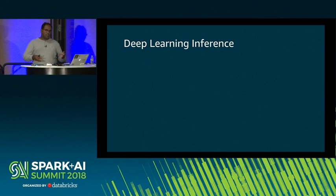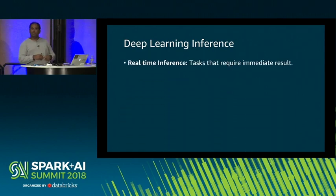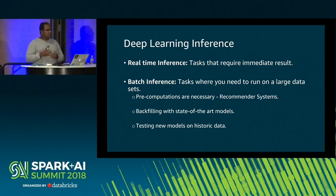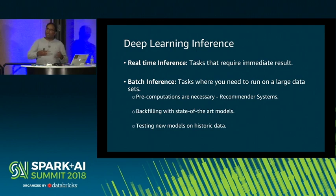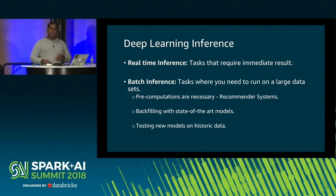The next phase is putting the model into production — inference — where you take the pre-trained model, apply new data, and get predictions. This can be done in two modes: real-time for tasks that need immediate feedback, and batch mode where you have lots of data. Batch is useful when pre-computations are necessary for services with low latency requirements like recommendation systems, backfilling inferences on historic data with state-of-the-art models, or testing new models before deployment.